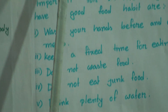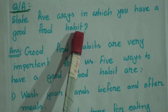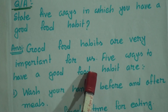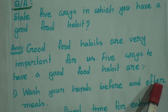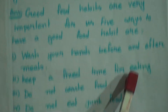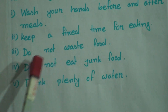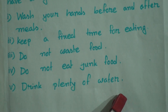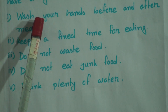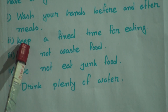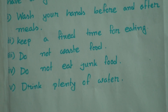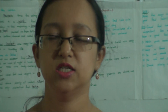Question answer — State 5 ways in which you have a good food habit. Answer: Good food habits are very important for us. The 5 ways are: 1) Wash your hands before and after meals. 2) Keep a fixed time for eating. 3) Do not waste food. 4) Do not eat junk food. 5) Drink plenty of water. My dear students, I hope you understand today's class. Practice this chapter at home. Till then, keep well. Assalamualaikum.